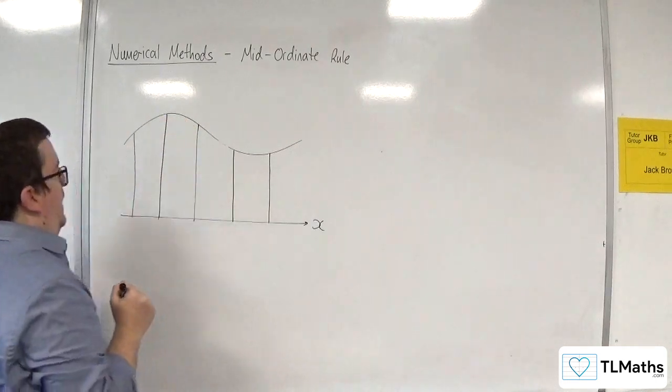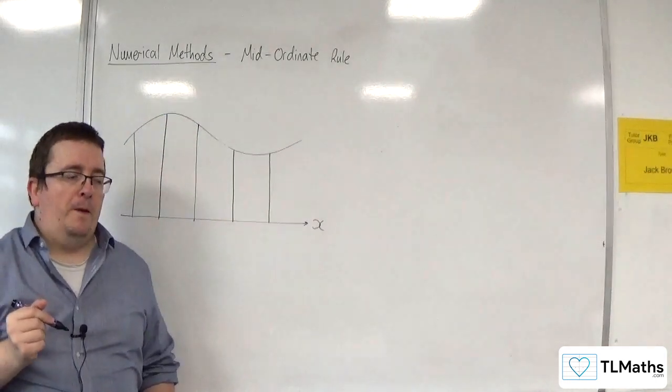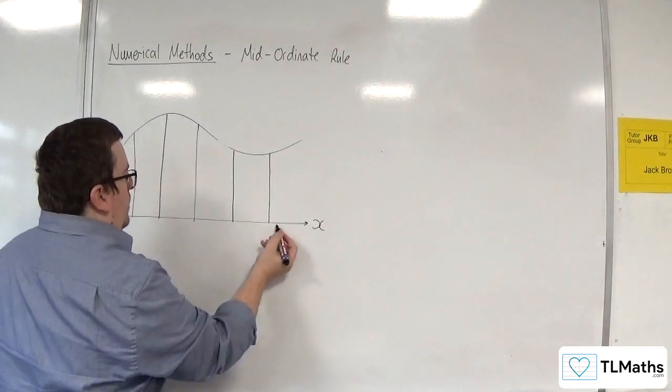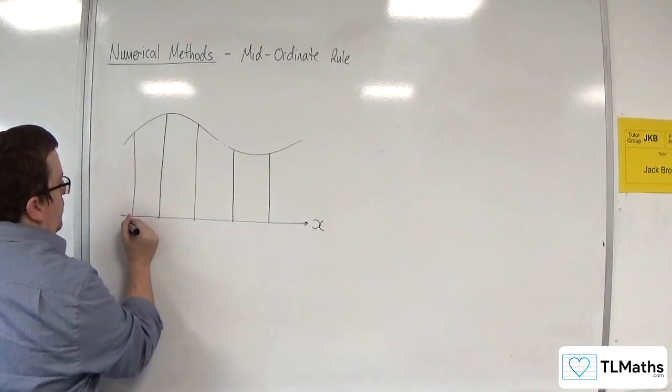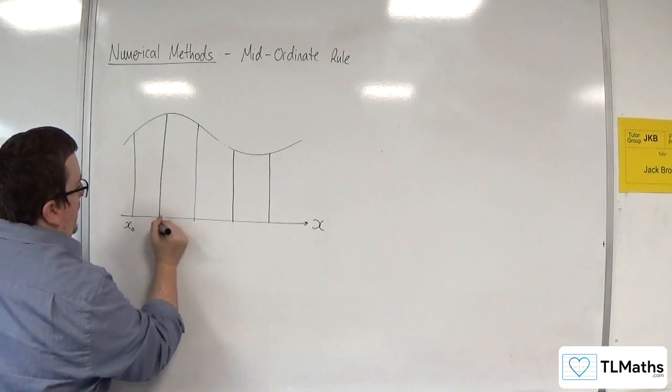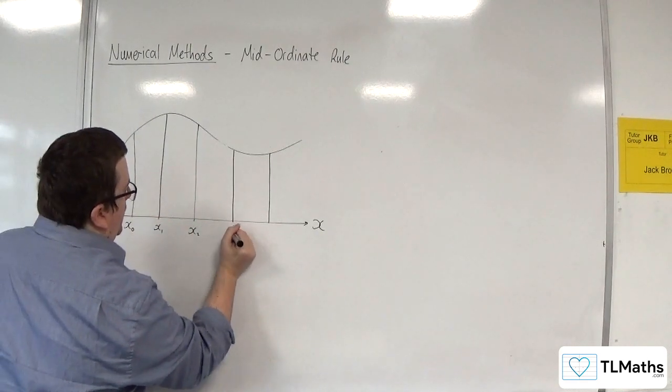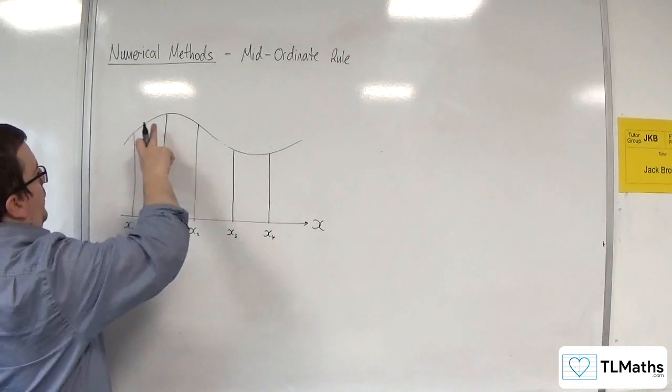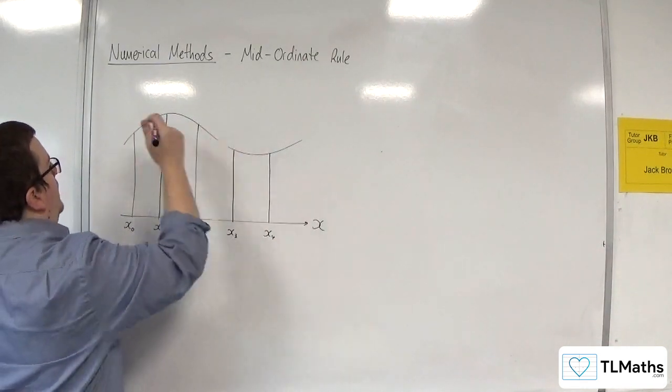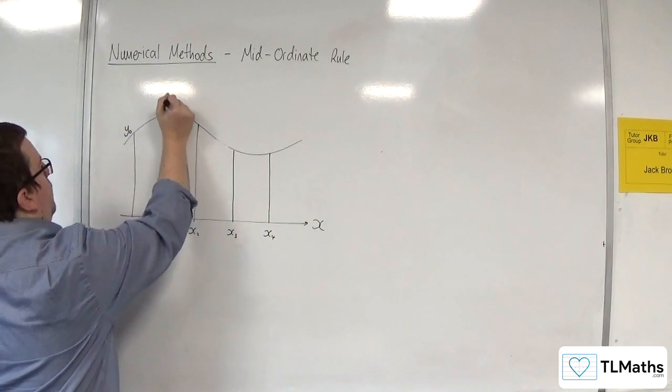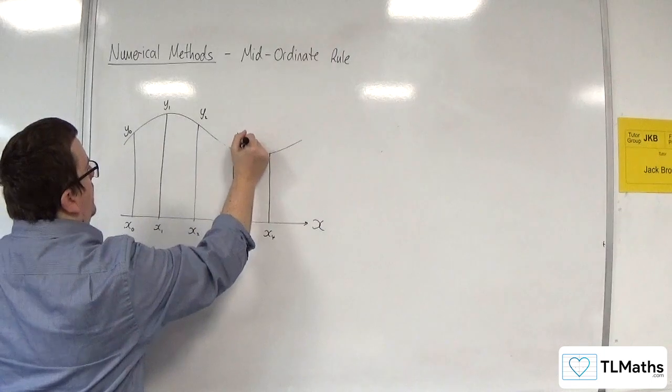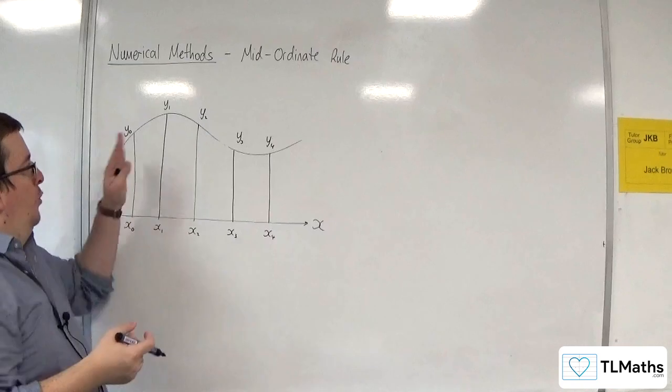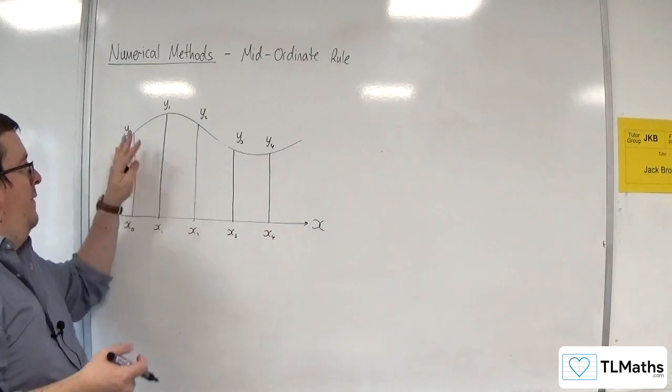These are meant to be of equal width - they're not quite, but you'll get the idea. Each of these are your x-ordinates, so you could label this as x₀, x₁, x₂, x₃, and x₄. The heights of each of these lines can be labeled as y₀, y₁, y₂, y₃, and y₄. They are the ordinates - you've got the x-ordinates and the y-ordinates.